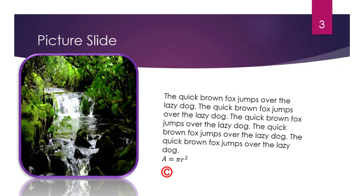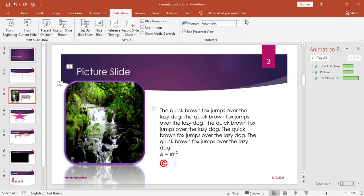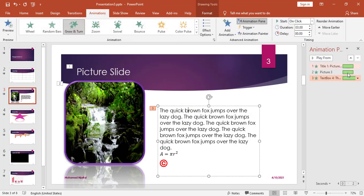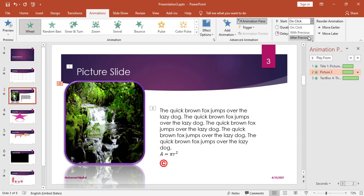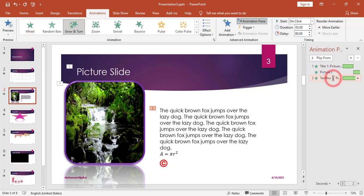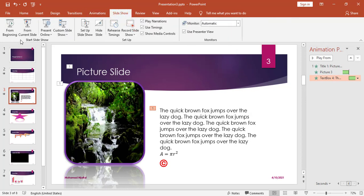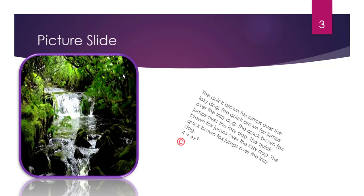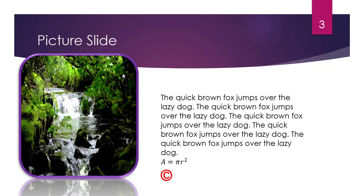If I don't want to click the mouse each time to make the picture and text box appear, I can go to the Animation Pane and set the picture animation to After Previous — so once animation one for the title finishes, the picture will appear automatically. I will do the same for the text box, setting it to After Previous so after the picture appears, the text box appears directly without using the mouse.